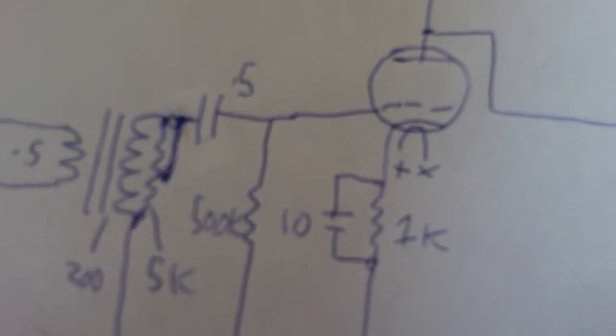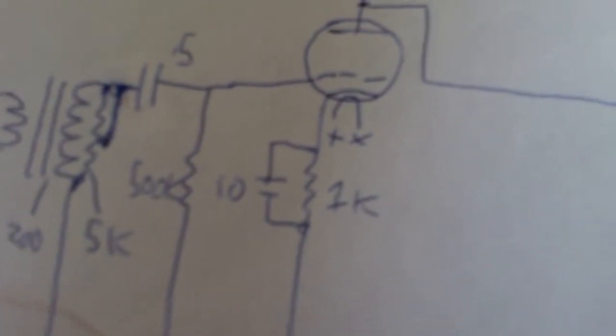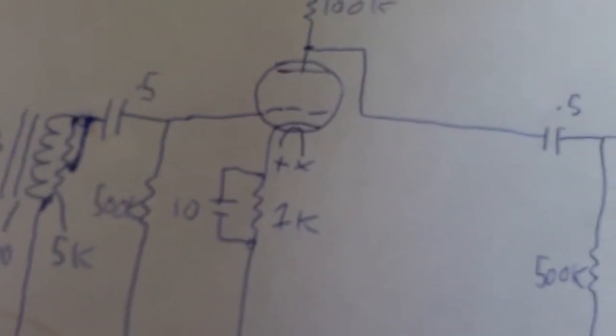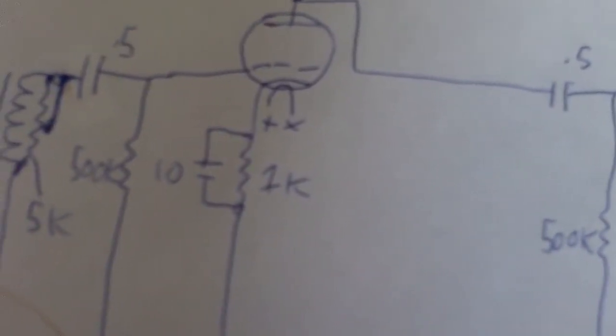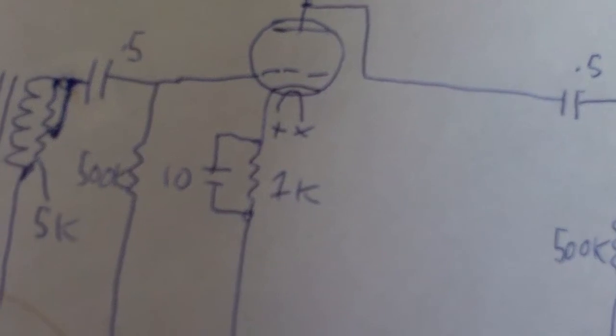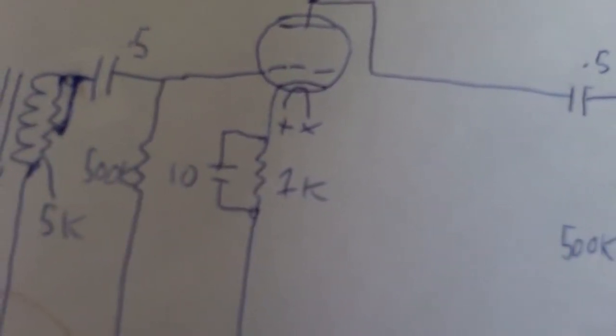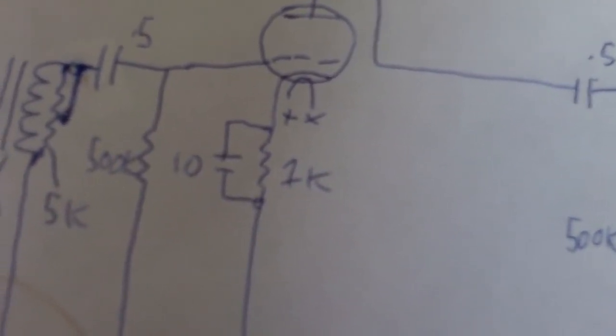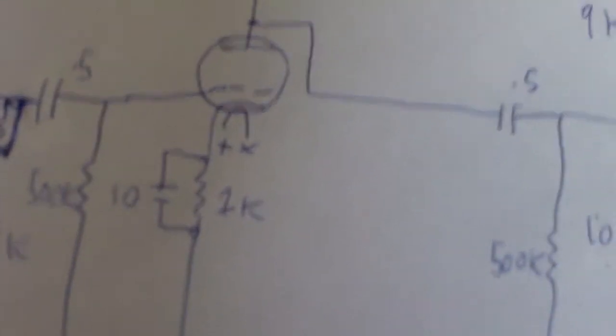And a 0.5 microfarad capacitor going into the tube. And then a 500k ohm resistor from the grid to ground to negatively bias it. Then there's a 1k ohm cathode resistor and a 10 microfarad bypass capacitor.